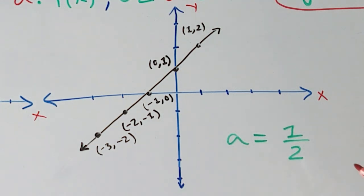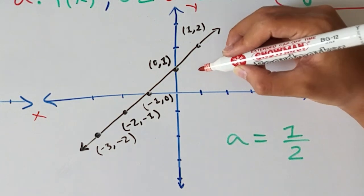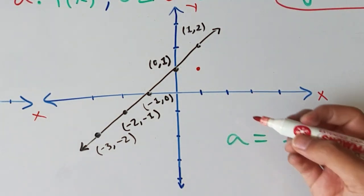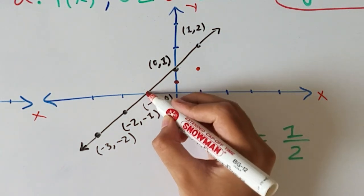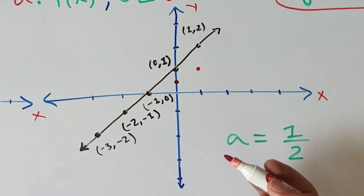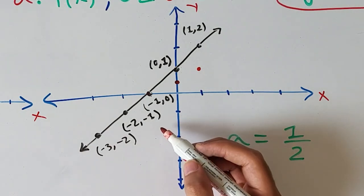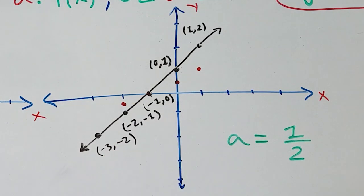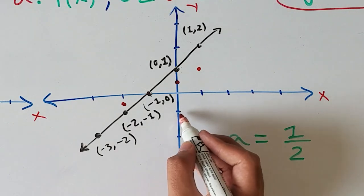For point (1, 2), multiply the y part by 1/2: half of 2 is 1, so the new point is (1, 1). For (0, 1), multiplying 1 by 1/2 gives 0.5, so the new point is (0, 1/2) — our y-intercept has changed. The x-intercept point (−1, 0) remains the same since 0 times 1/2 is still 0. For (−2, −1), the new point is (−2, −1/2). For (−3, −2), the new point is (−3, −1).